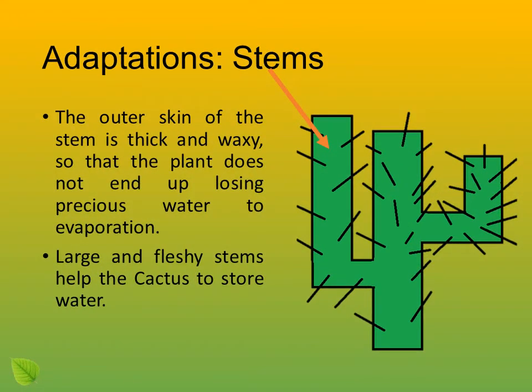Adaptation — stems. The outer skin of the stem is thick and waxy so that the plant does not end up losing precious water to evaporation. Large and fleshy stems help the cactus to store water.